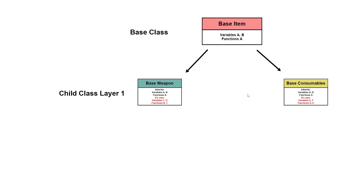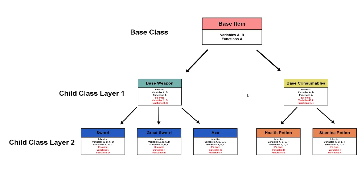From those child classes, we can have another layer of child classes — such as sword, greatsword, axe, health potion, or stamina potion. They all inherit variables and functions from their parents and the parents of the parent. This is essentially what inheritance is about, and it can be a very powerful tool when you develop a game.